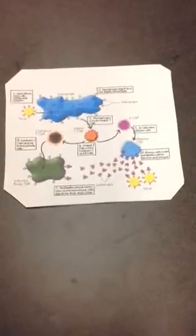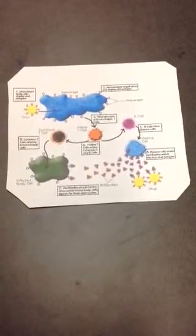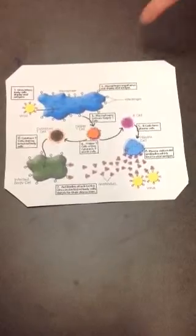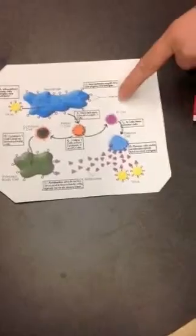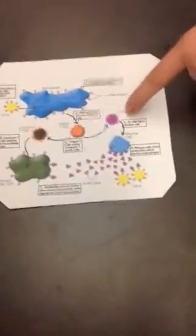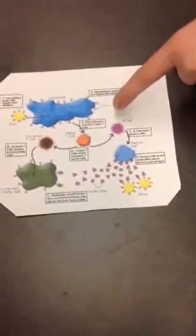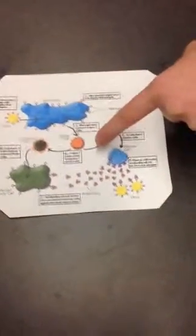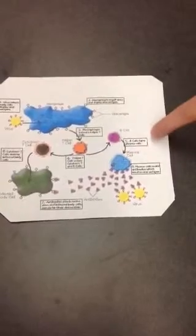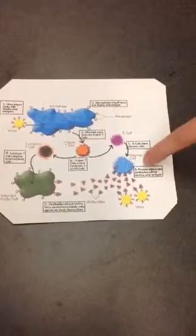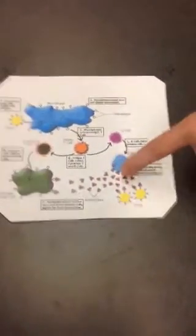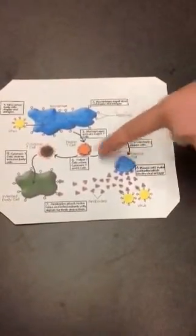Here's a basic outline of how the virus invades and spreads in the body. First, the virus affects the body and cells display antigens. Second, the macrophage takes the virus inside itself and activates helper T cells. Then the helper T cells activate cytotoxic T cells, which kill infected cells, and B cells form plasma cells which make antibodies to fight the antigen. The antibodies then attach to the virus and cytotoxic T cells destroy the remaining infected cells.